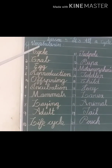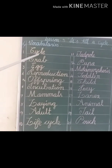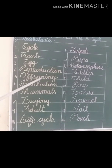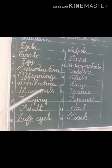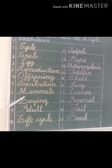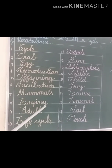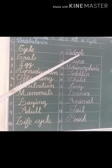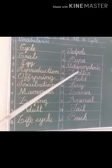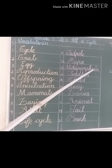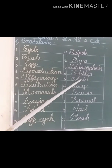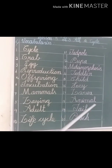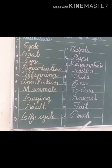Let's revise our vocabularies: cycle, crab, egg, reproduction, offspring, incubation, mammals, laying, adult, life cycle, tadpole, pupa, metamorphosis, toddler, child, joey, larva, animal, tail, pouch.